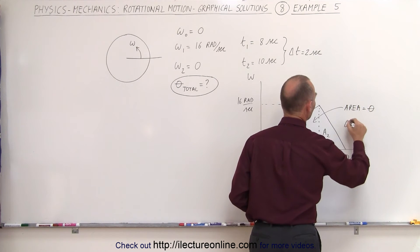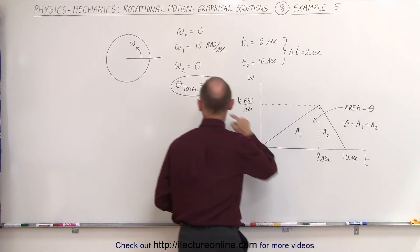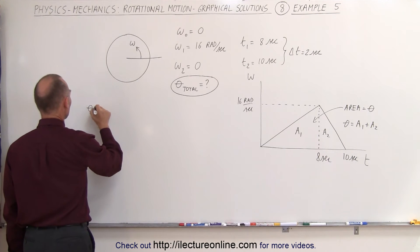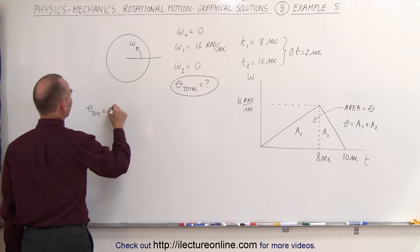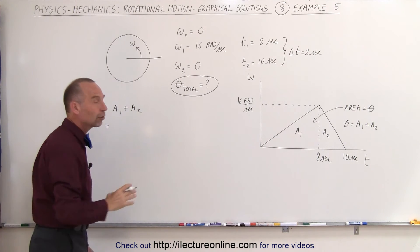So in this case, theta is equal to the sum of A₁ plus A₂, because we're looking for the total area. Theta total equals A₁ plus A₂, and all we have to do is find the areas of those two triangles.